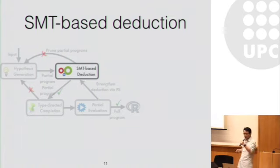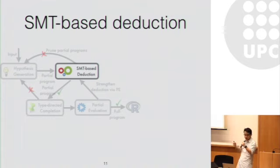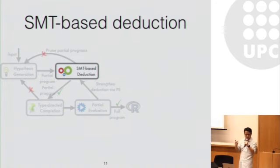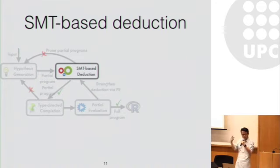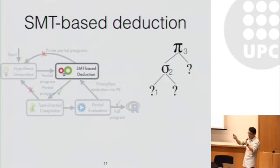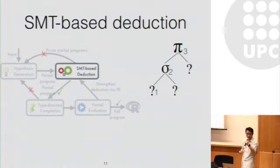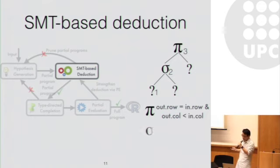Now let's take a look at how this deduction works. In order to perform deduction, we need to compute the specification for the current partial program. To compute the specification for the partial program, we need to use the component specifications that involve the current partial program. Given the partial program from the previous slide, as well as the corresponding components for projection and selection, the specification for projection is easy to understand but over-approximates the behavior of projection.